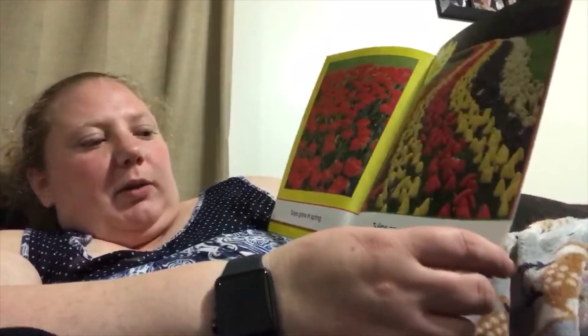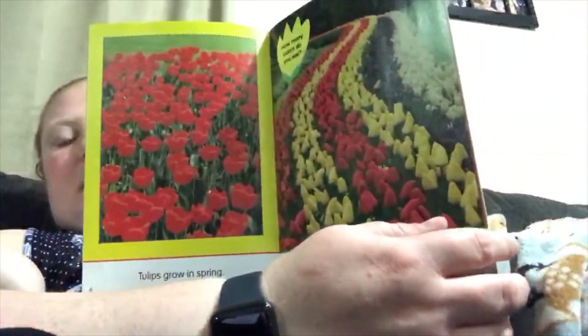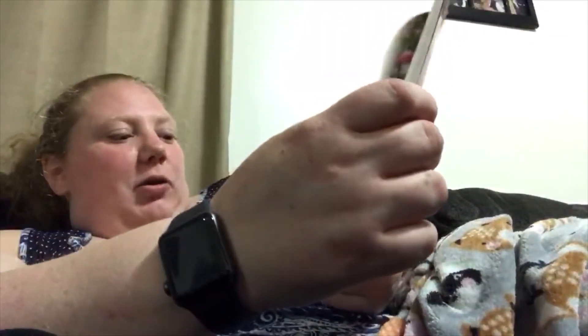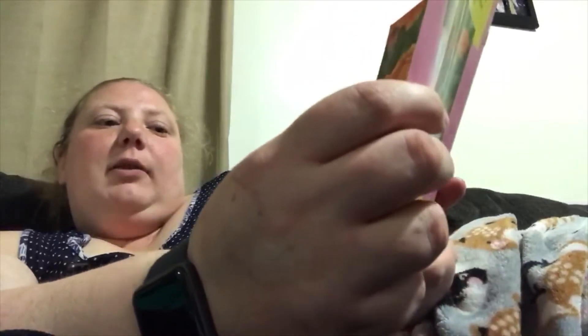Snapdragons grow in the summer. Each flower looks a little like a dragon's head. Asters grow in the fall. Each flower has many petals. Marigolds live for only one year. Flowers that live only one year are called annuals.